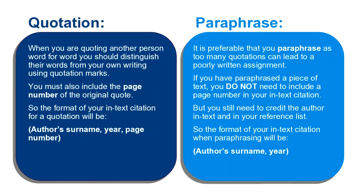When you're quoting another person word for word, you should distinguish their words from your own writing using quotation marks. You must also include the page number of the original quote. So the format of your in-text citation for a quotation will be: author's surname, year, page number. It's preferable that you paraphrase, as too many quotations can lead to a poorly written assignment.